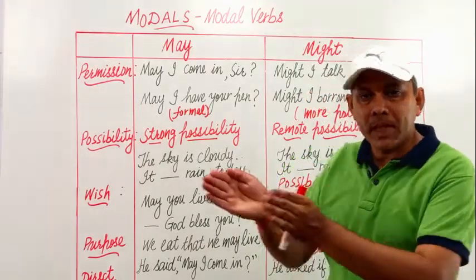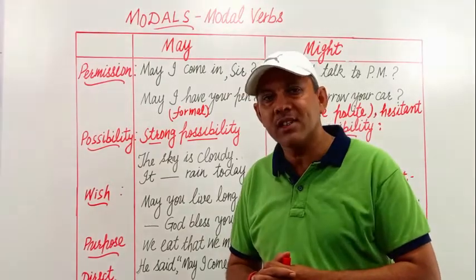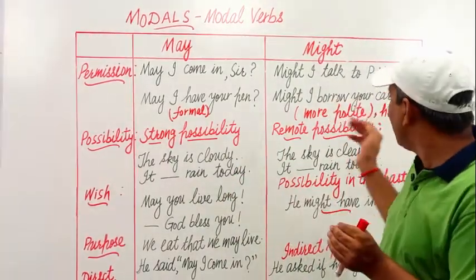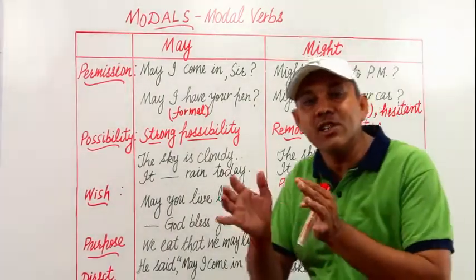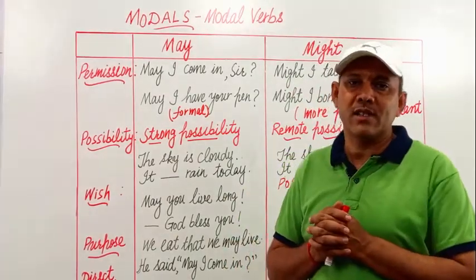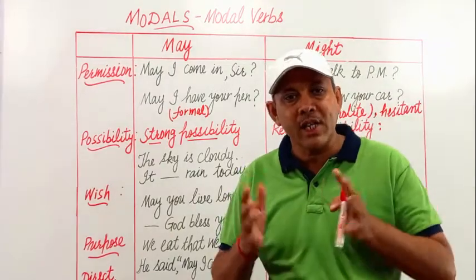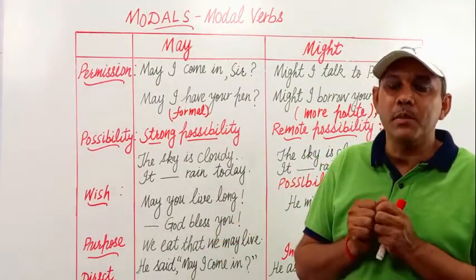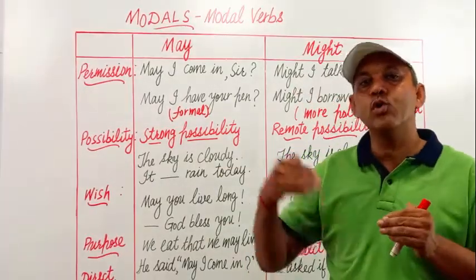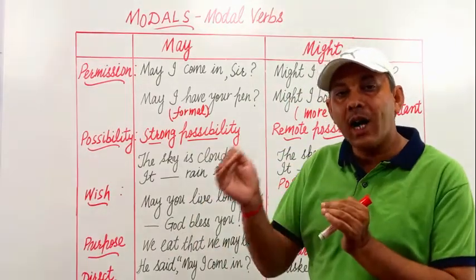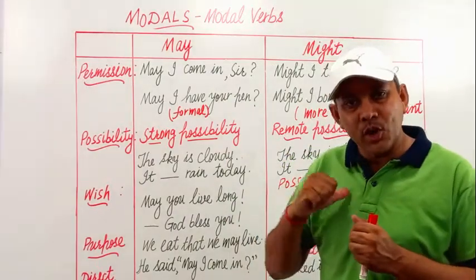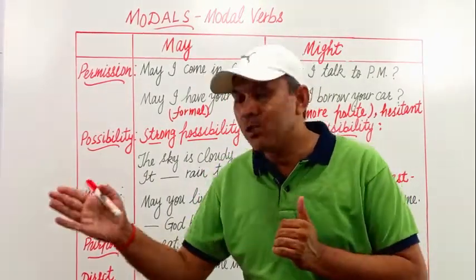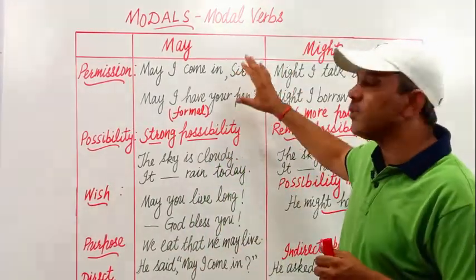I will use 'might' instead of 'may.' For example, 'Might I talk to the Prime Minister of India?' I must be very polite and will take this permission in a hesitant way with a more polite request. Similarly, 'Might I borrow your car?' — if someone in my family is ill and I need to take them to the hospital urgently, I go to my neighbour and ask in a very polite way: 'Might I have your car? Someone is ill at my home and I have to take him to hospital.' This is the difference between may and might in the case of permission.